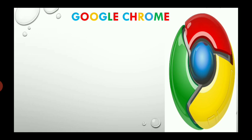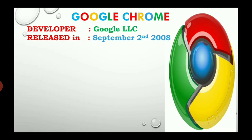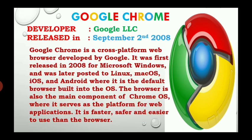Google Chrome - most of us work in Google Chrome. The developer is Google LLC, released on September 2nd, 2008. Google Chrome is a cross-platform web browser developed by Google. It was first released in 2008 for Microsoft Windows and was later ported to Linux, Mac OS, iOS, and Android, where it is the default browser built into the operating system. The browser is also the main component of Chrome OS, where it serves as a platform for web applications. It is faster, safer, and easier to use.